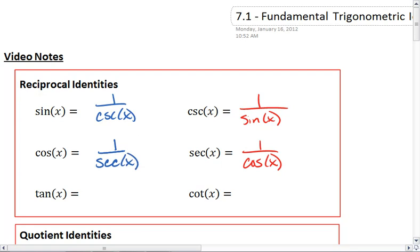And then for tangent and cotangent, cotangent is 1 over tangent, which means tangent is 1 over cotangent. Essentially, each of these pairs are reciprocals of each other.